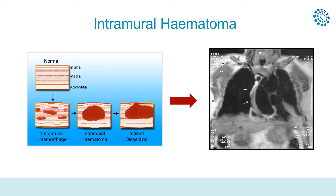Intramural hematoma is another entity in Acute Aortic Syndrome, defined as the presence of blood within the aortic wall without intimal disruption or an identifiable entry tear on imaging. It is a consequence of the rupture of the vasa vasorum — very small vessels in the aortic wall — leading to hemorrhage within the middle layer.